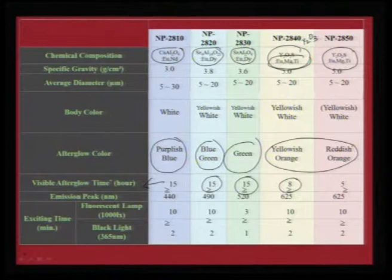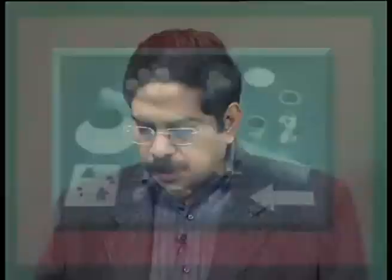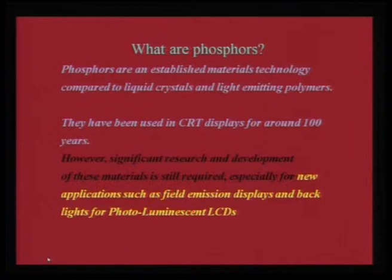These phosphor materials are mainly used in phosphor lamps, and the latest generation bulbs are CFLs, which have a very strong coating of these fluorescent materials. These oxides have a variety of applications, and we will specifically look into phosphors used in TV screens.